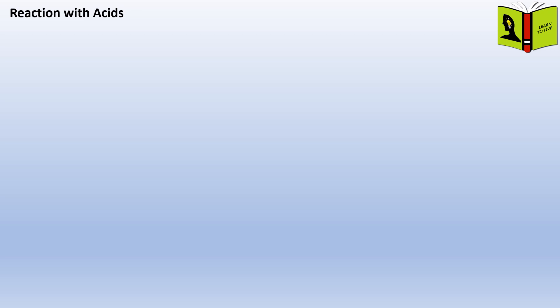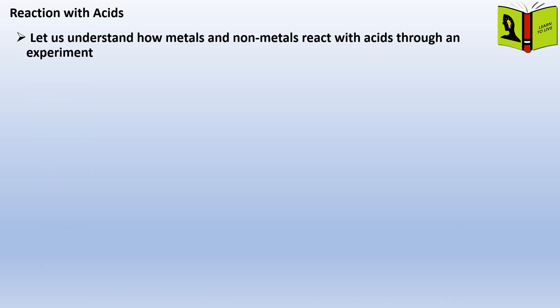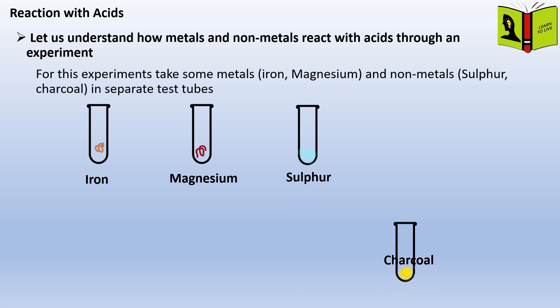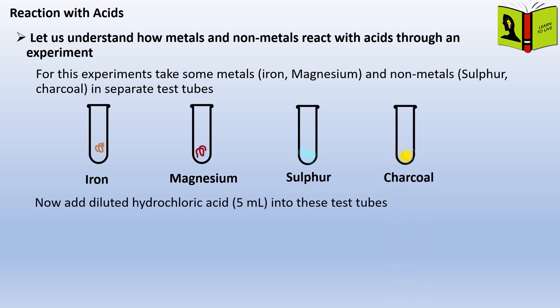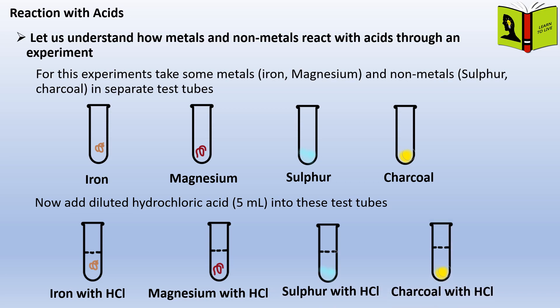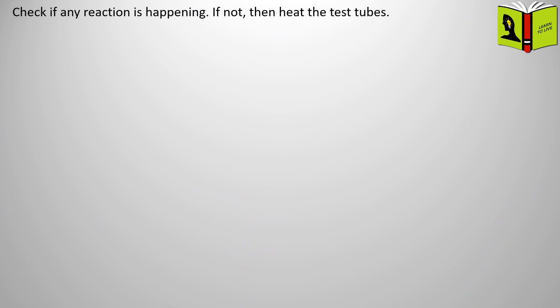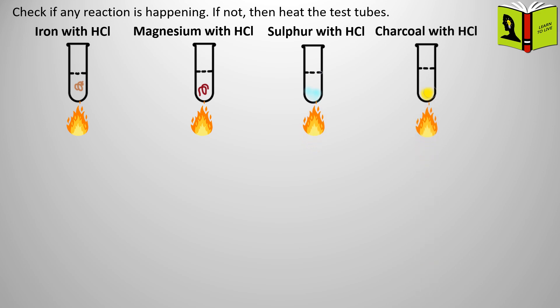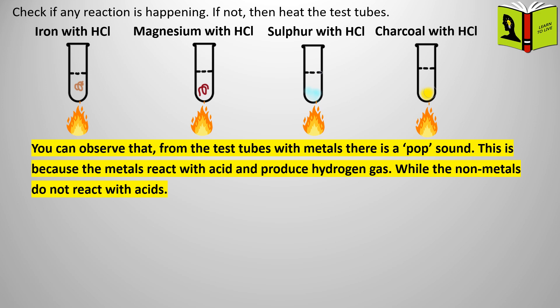Reaction with acids. Let us understand how metals and non-metals react with acids through an experiment. Take some metals and non-metals in separate test tubes. Now add diluted hydrochloric acid into these test tubes. Check if any reaction is happening; if not, then heat the test tubes. You can observe that from the test tubes with metals there is a pop sound. This is because the metals react with acid and produce hydrogen gas, while non-metals do not react with acids.